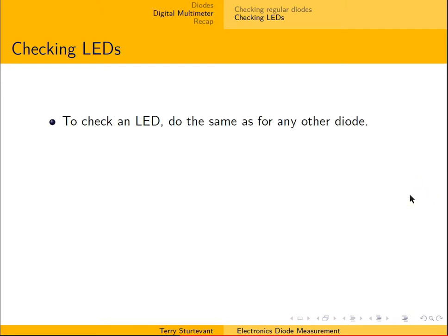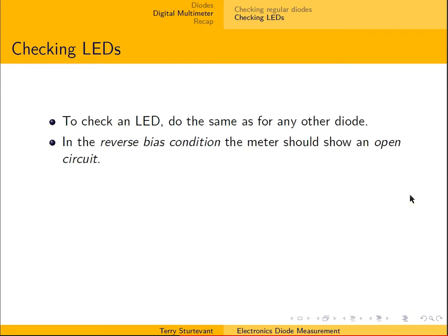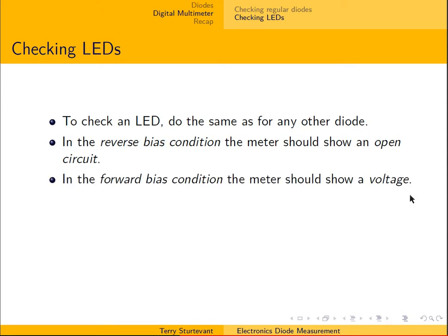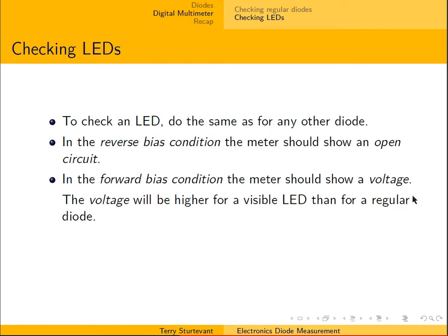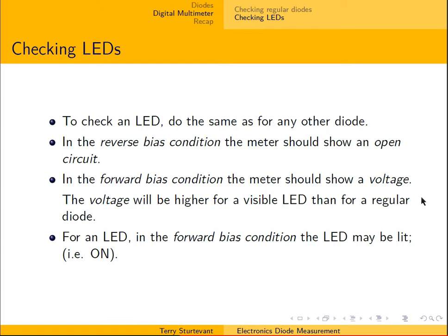For checking LEDs, you do the same as for any other diode. In the reverse bias condition, the meter should show an open circuit. In the forward bias condition, the meter should show a voltage. The voltage will be higher for a visible LED than for a regular diode. And for an LED in the forward bias condition, you may notice that the LED will actually be lit — so it will be on.